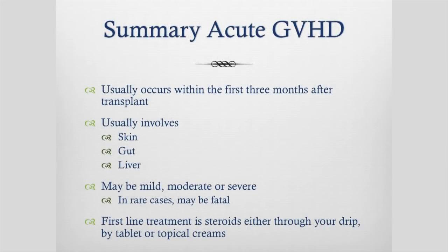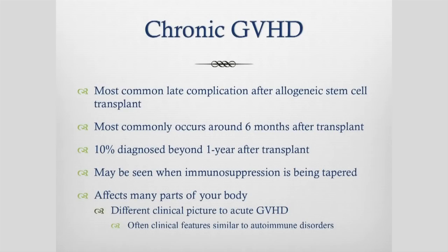To summarize acute graft versus host disease: it usually occurs in the first three months after the transplant. The three main organ systems it involves are the skin, the gut, and the liver. It may be mild and need no treatment, it may be moderate, it may be severe, and in rare cases it may be fatal. The first line of treatment is steroids — whether in tablet form, through a drip, or as topical creams.